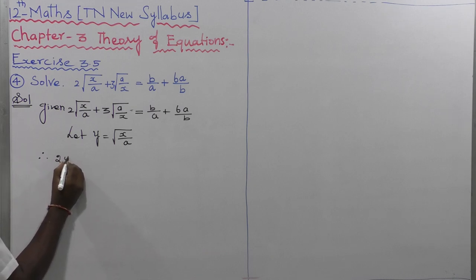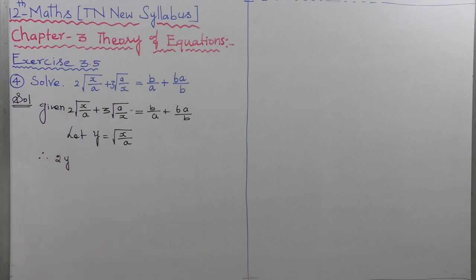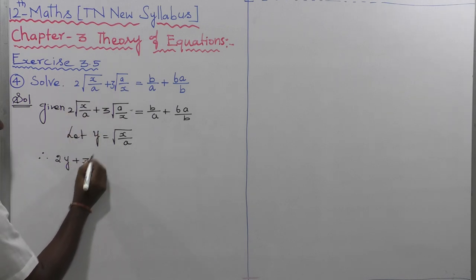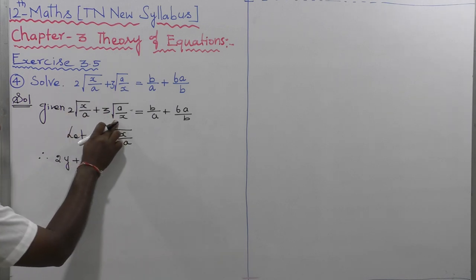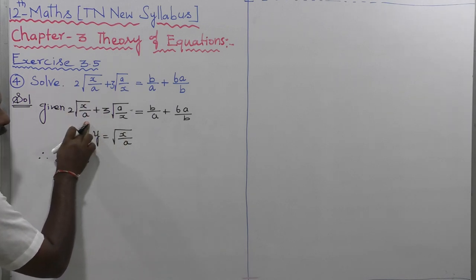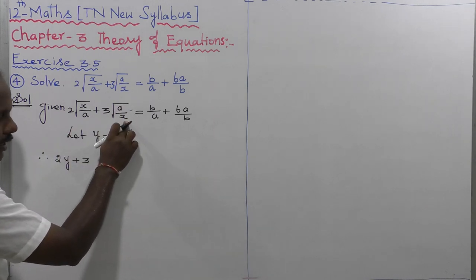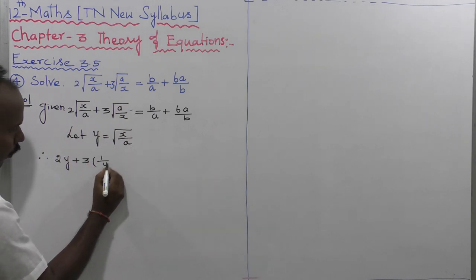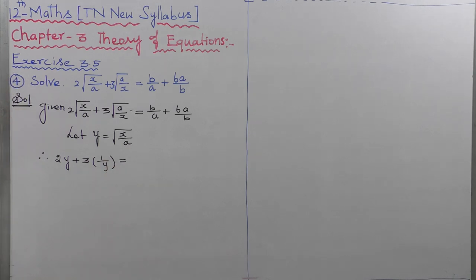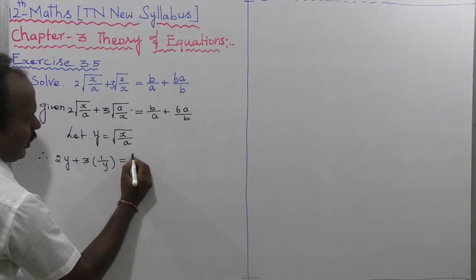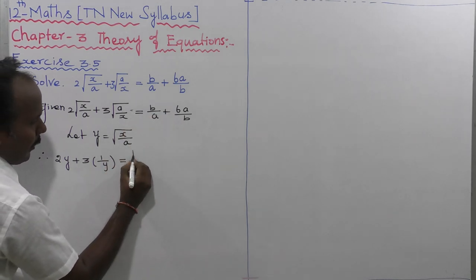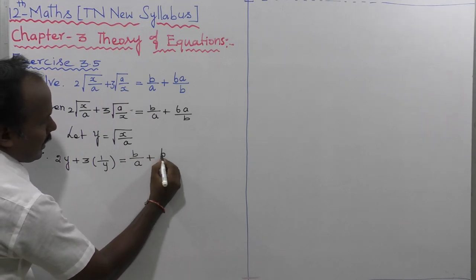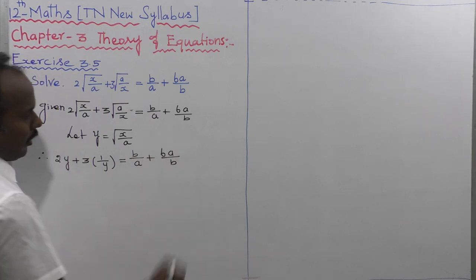Replacing root of X divided by A with Y: 2 times Y plus 3 into — this one is the reciprocal — because this one is X by A and this one is A by X, that is called 1 divided by Y — is equal to B divided by A plus 6A divided by B.